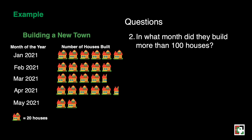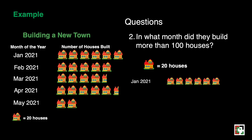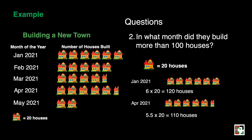For question two, in what month did they build more than 100 houses? One house symbol equals 20 houses. For January there are 6 symbols: 6 times 20 equals 120 houses. For April there are 5 and a half symbols: 5.5 times 20 equals 110 houses. So our answer is January and April both had more than 100 houses built.